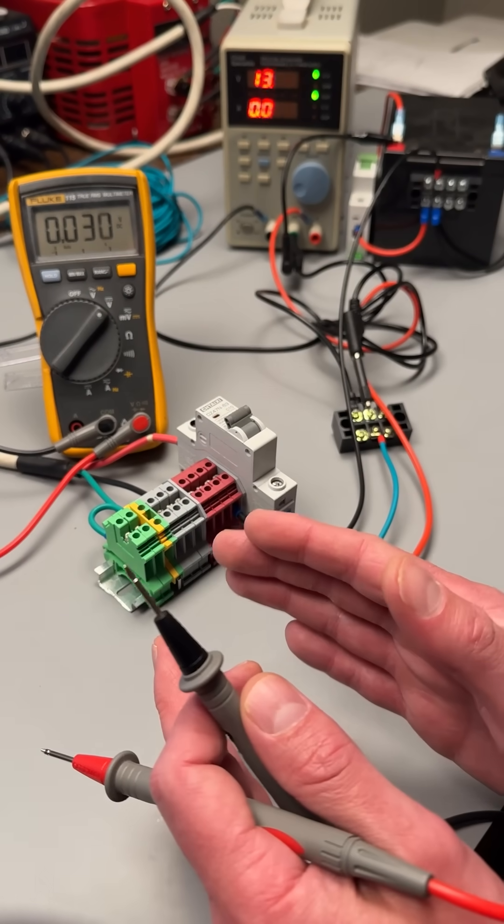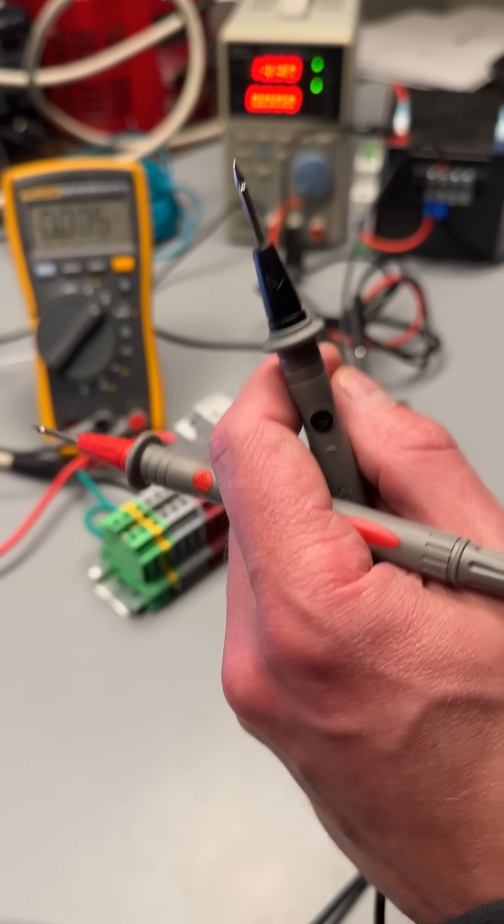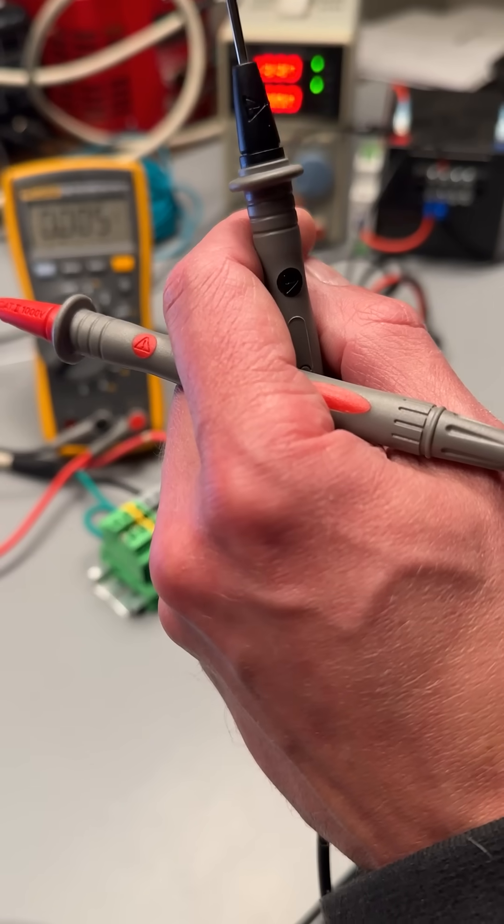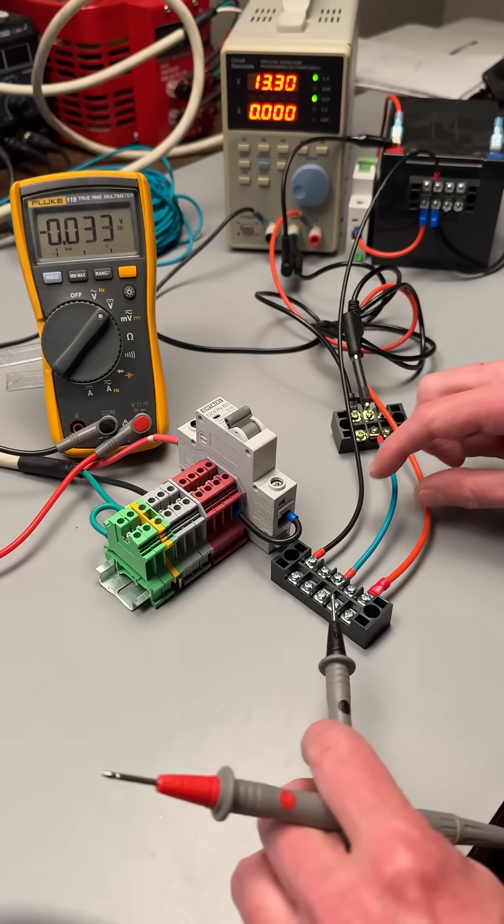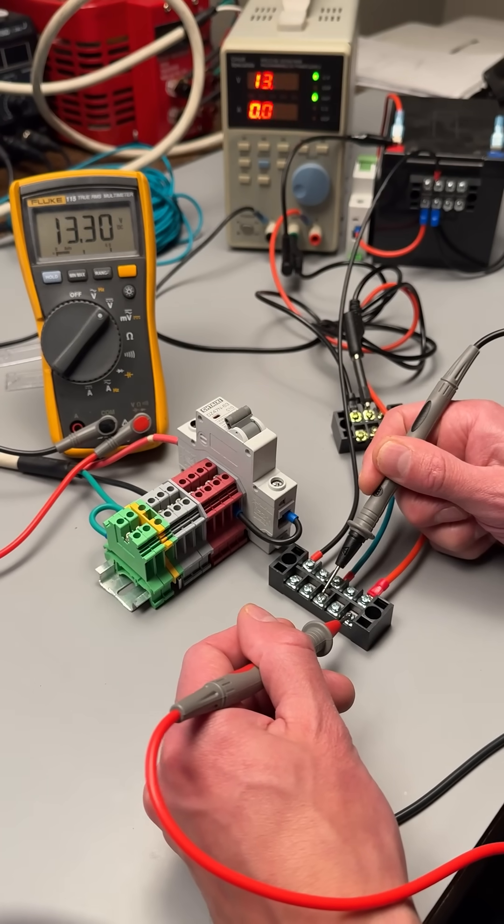But what's crazy about negative voltage in a DC circuit is that we're talking about it relative to our reference point. And so this green wire here is my reference, and so I have 13 positive volts here.